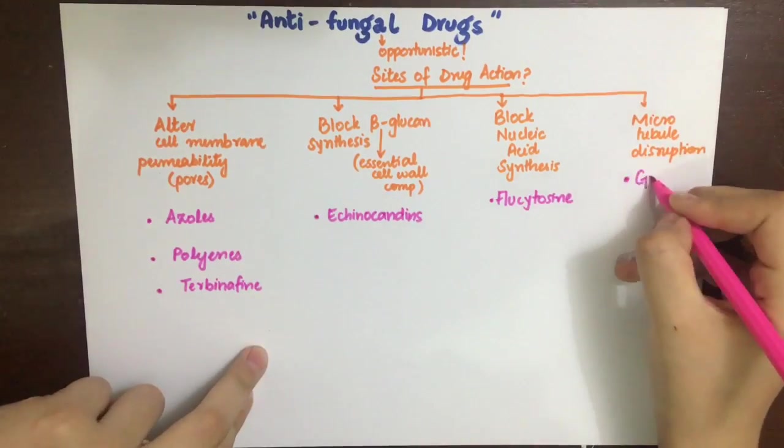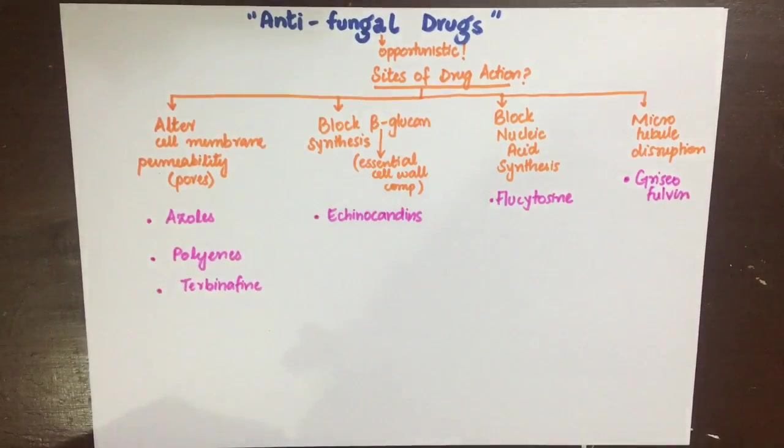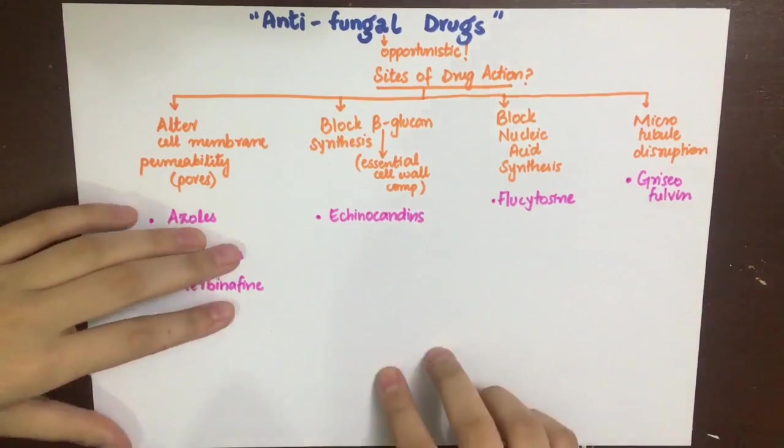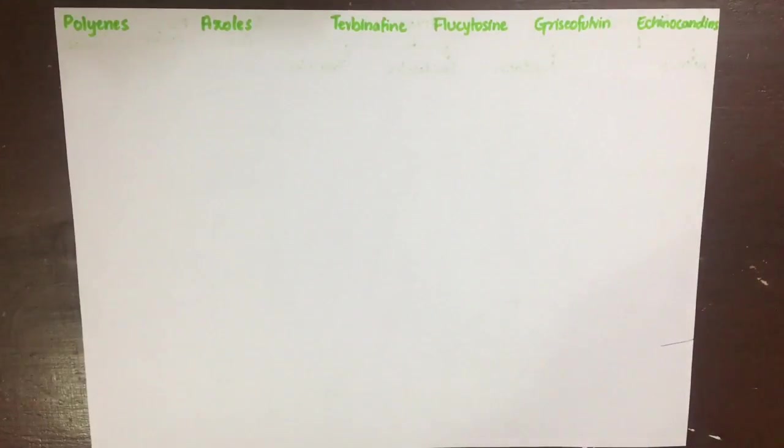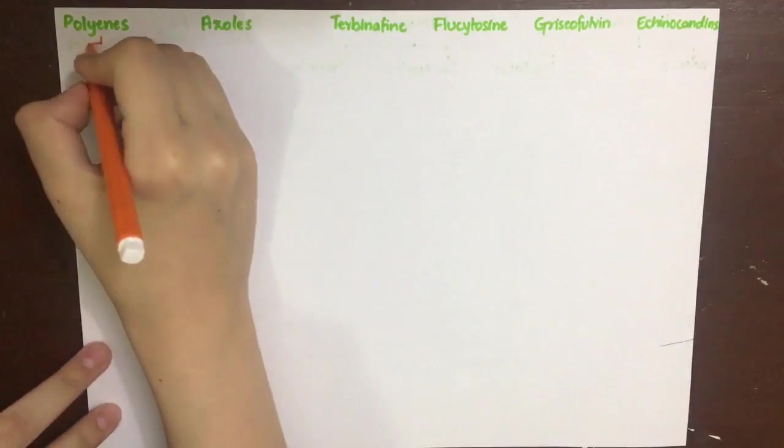Lastly, we can disrupt the microtubular functions by griseofulvin, thus inhibiting fungal mitosis by acting as a fungistatic drug. Now we'll discuss each of them in detail, and I have to warn you this will get a little messy.